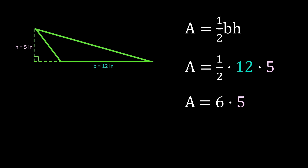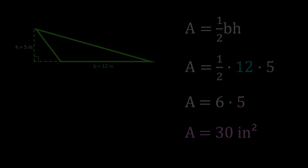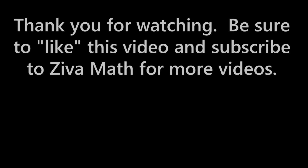12 divided by 2 is 6, and then we'll need to multiply by the 5. So our area is 6 times 5, which is 30 — so 30 inches squared. Thank you for watching. Be sure to like this video and subscribe to Ziva Math for more videos.